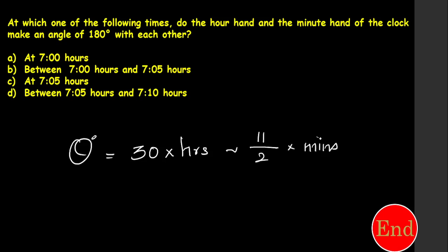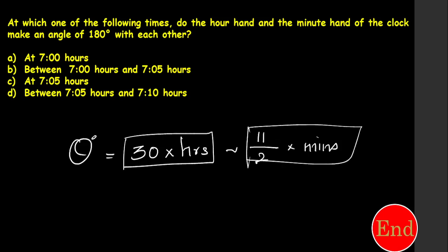Using this formula, I can get the answer easily. From the hours part I get the angle contribution, and the second term accounts for minutes. Since all options show 7 hours with different minutes — 5, 10, or 0 — I calculate 30 times 7 which is 210 degrees. So at exactly 7 o'clock, the angle is 210 degrees.